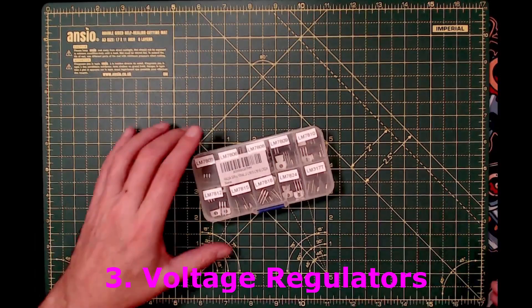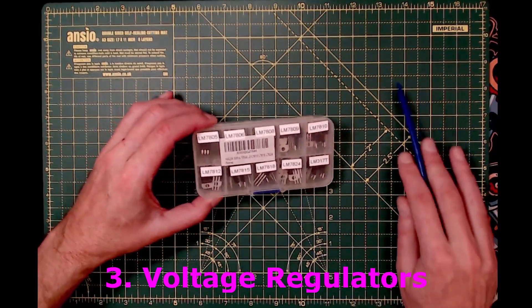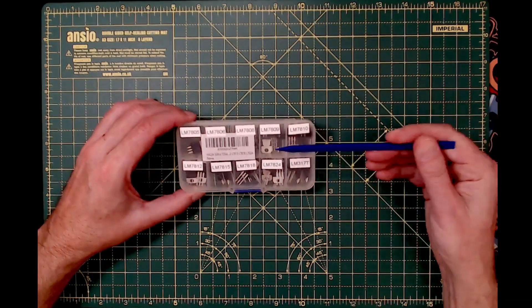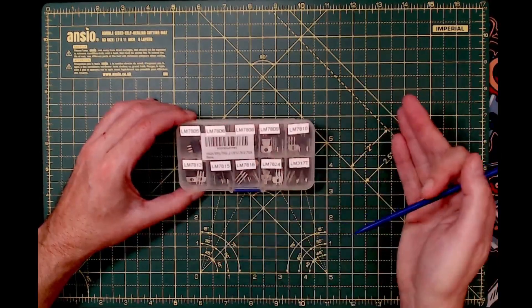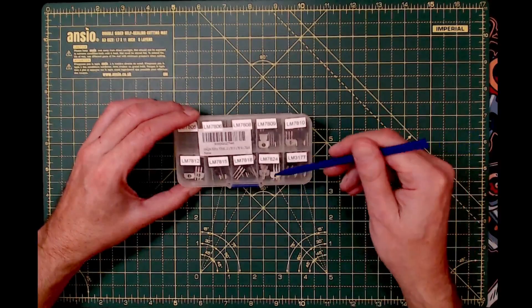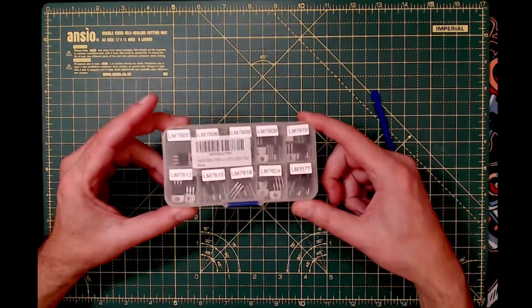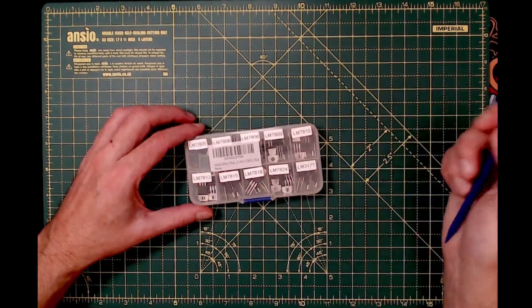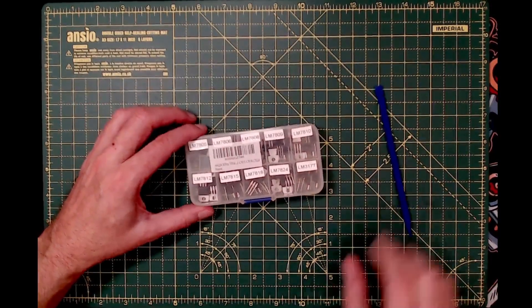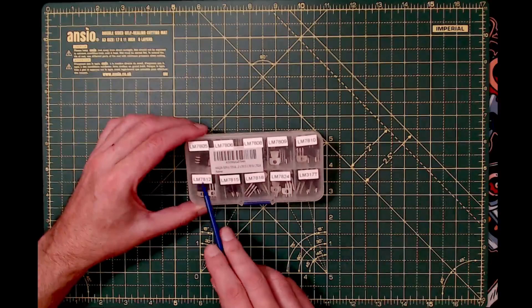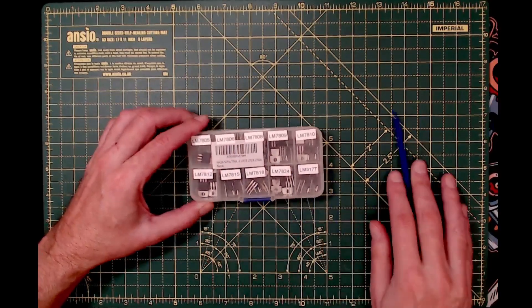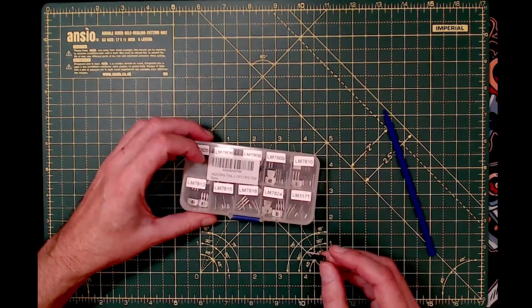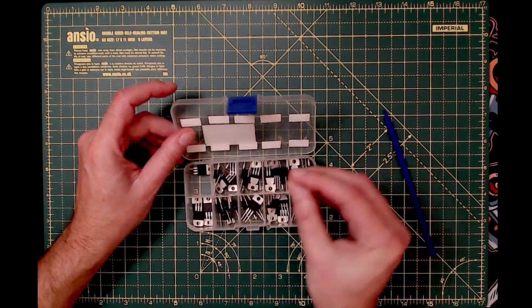Next up: voltage regulators. This is the LM78 series—I use these all the time. It's one of the simplest ways to get a voltage from a higher voltage. Don't buy these individually or in twos and threes, just buy a kit. They're dirt cheap, and if you've used them once, you'll want them again. I like to have them on the shelf ready. I've labeled these with the various ones—that's an LM7808, an 8-volt regulator.